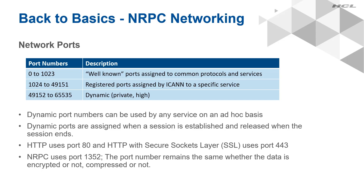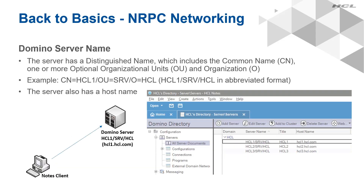For a Notes client to be able to communicate with a server, it needs the following: TCP/IP networking provided by the OS, and NRPC networking provided by the client and server. When a server is configured, its fully qualified domain name, or FQDN, is provided in its server document. This is the same as its DNS name. It is typically the server's common name — the CN — plus the DNS domain name. So if we have a server whose name is CN=HCL1/OU=SRV/O=HCL, and the DNS domain name is hcl.com, then we would have hcl1.hcl.com as the server's FQDN.